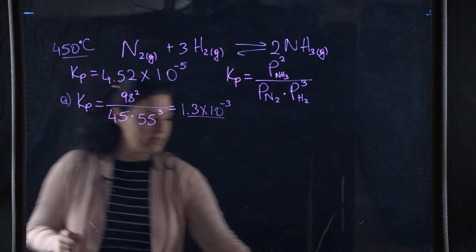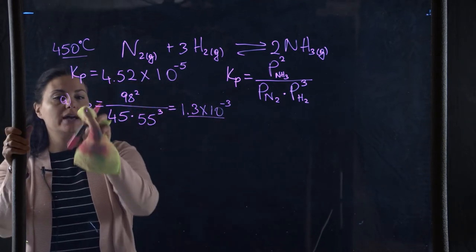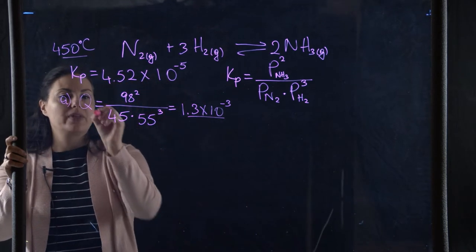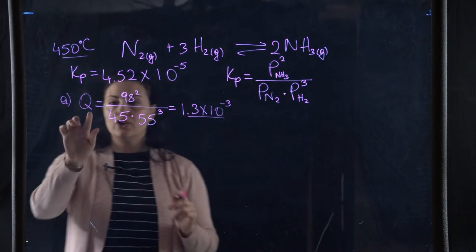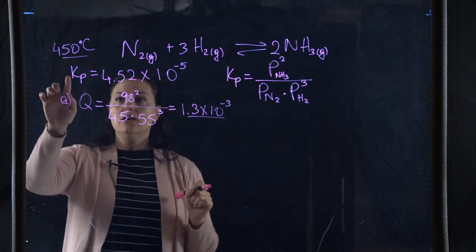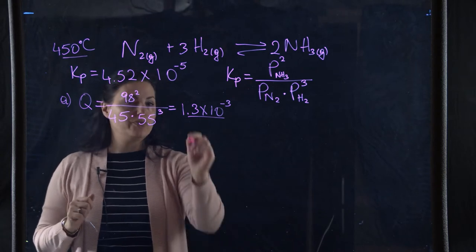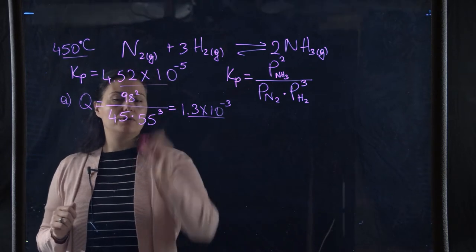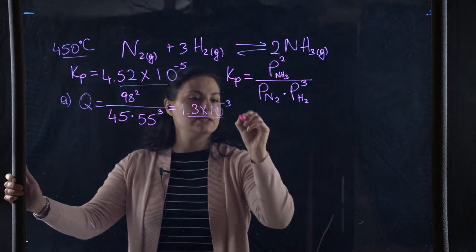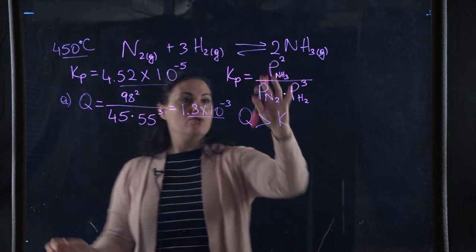This is the Q value — not K, since we don't yet know if the system is at equilibrium. Q = 1.3×10⁻³. Comparing to K = 4.52×10⁻⁵, Q is larger than K.